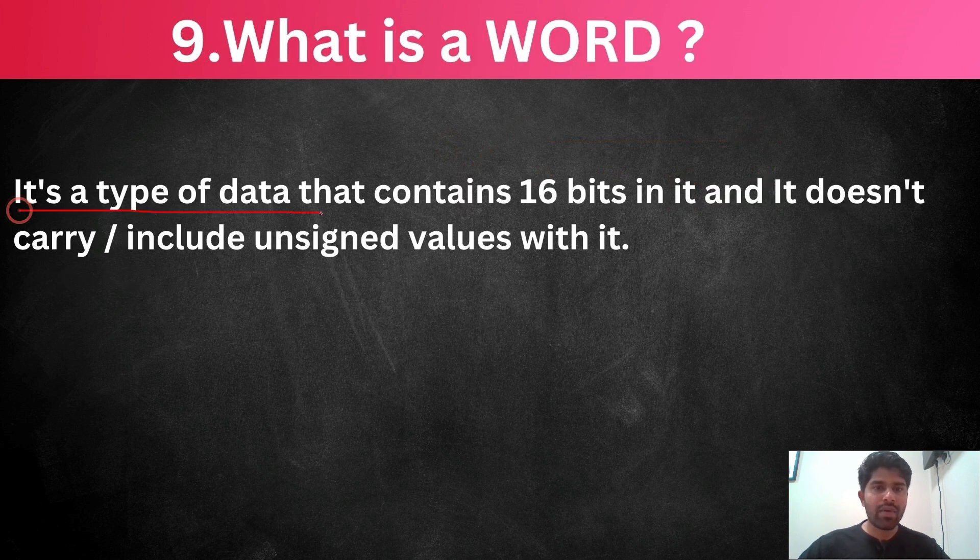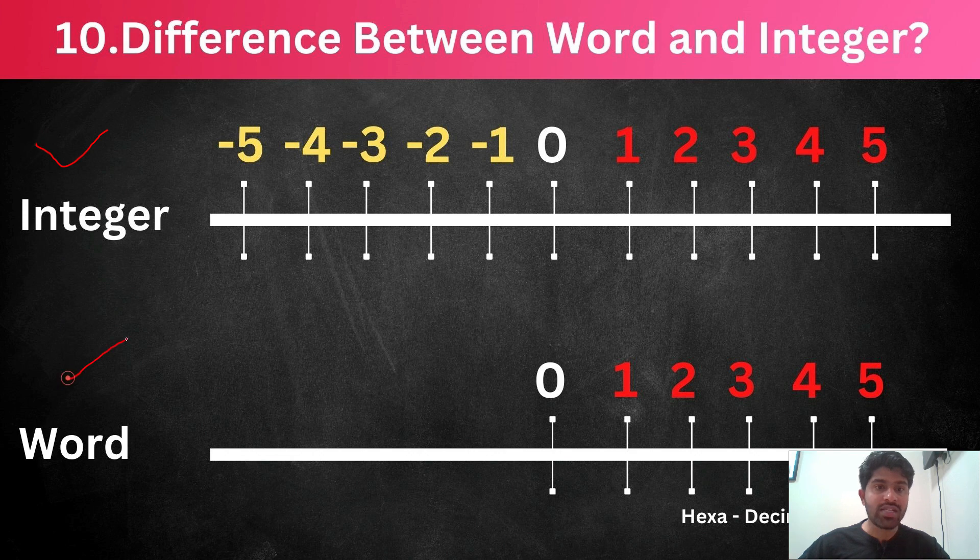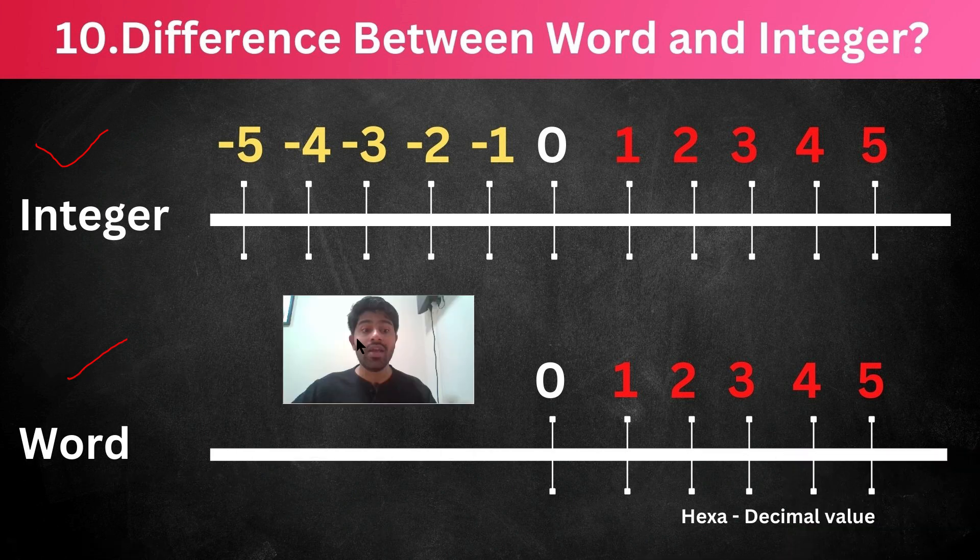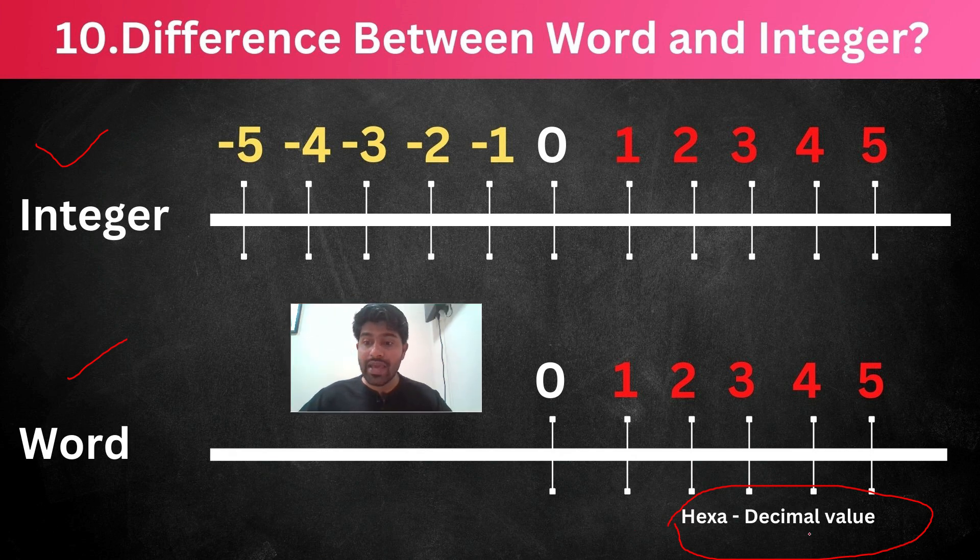So, what is a word? It is a type of data that contains 16 bits in it and it does not carry or include any unsigned values with it. So, first you have to understand the difference between integer and word because already integer having negative values, positive values and 0. Then why the hell I have to use this word? So, your question is correct. But why we are using word because of the hexadecimal value. Some of the instruments giving me hexadecimal value. So, I have to read it that time I will use the word. So, what is mean by hexadecimal value? If you know it, you please mention in comment.